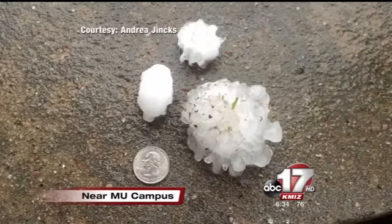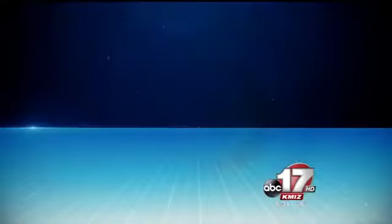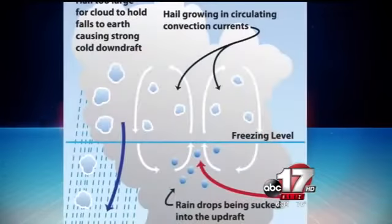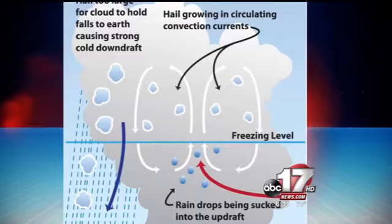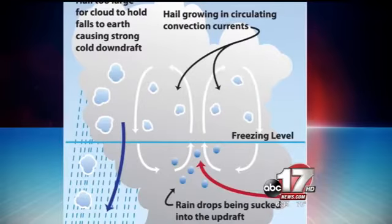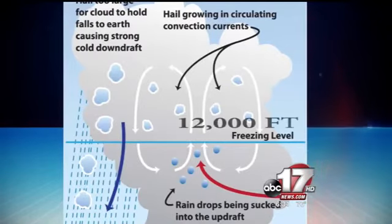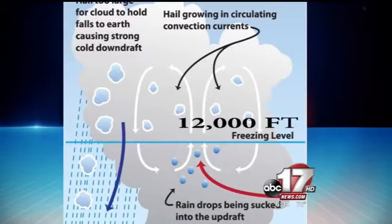The main ingredient for hail formation is where the freezing line is located. Freezing temperatures are needed in order for ice to form. As a rule of thumb, if the freezing line is below 12,000 feet, this is cold enough aloft for hail to reach the surface.